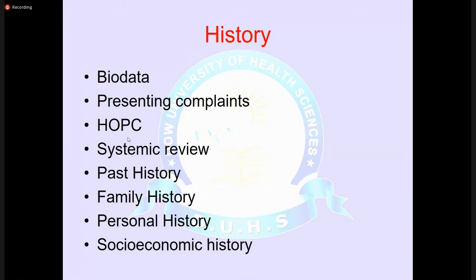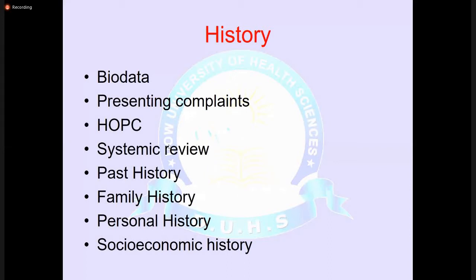Systemic review involves asking one or two questions from each body system to check if that system is affected. For example, from the respiratory system, ask about dyspnea or hemoptysis; from the gastrointestinal system, ask about abdominal pain or diarrhea; from the neurological system, ask about vertigo and headache; from the cardiovascular system, ask about palpitations. This ensures the detailed history captures other possible conditions, such as diabetes.